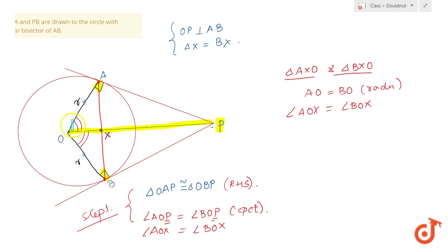This side is common in both triangles, which is OX. I can say that OX is equal to OX, which is common. So by side-angle-side, SAS, these two triangles are congruent. Triangle AXO will be congruent to BXO.